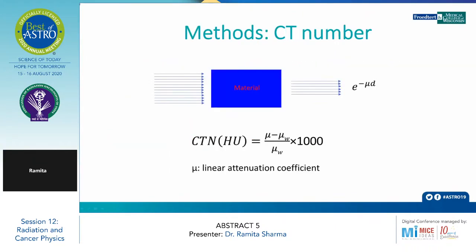This is the CT-number method. As we know, whenever radiation passes through a material, it will get partly absorbed and partly transmitted. Mu is the linear attenuation coefficient, and HU is the Hounsfield unit, given by the formula: (mu minus mu-water) divided by mu-water, multiplied by 1000. They have taken this model to calculate the change in CT-number of the acinar cells as well as the adipose cells.